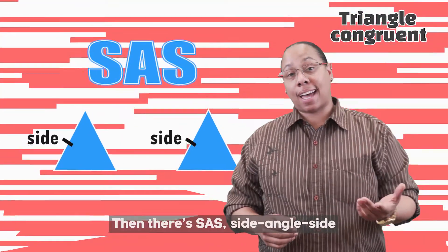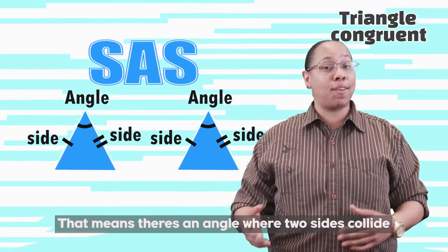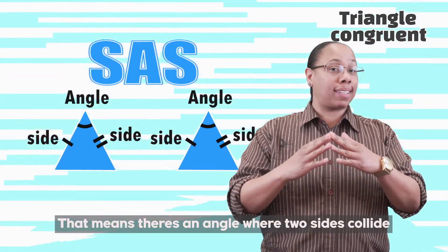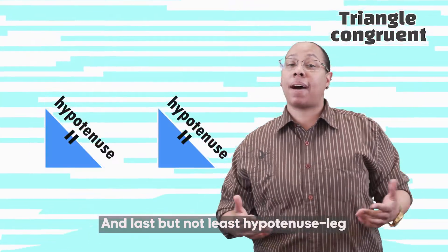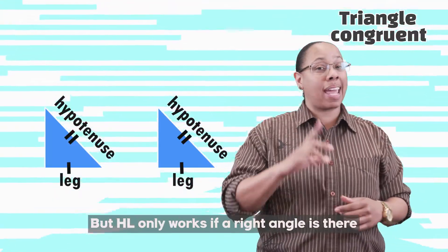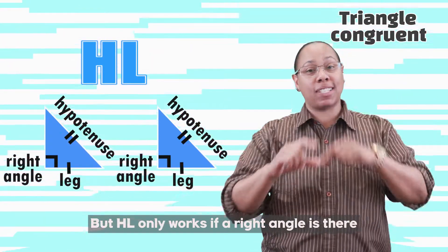Then there's SAS — side, angle, side — that means there's an angle where two sides collide. And last but not least, hypotenuse leg, but HL only works if a right angle is there.